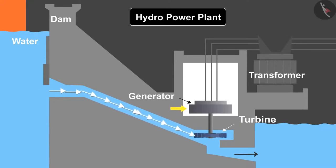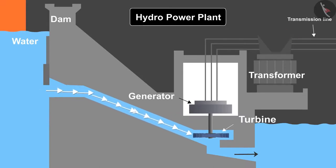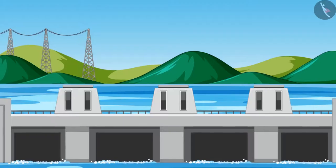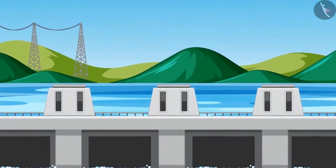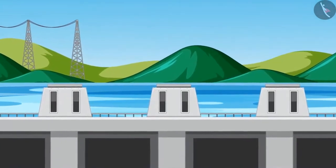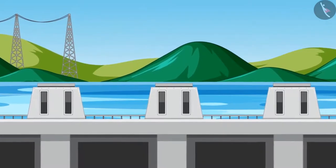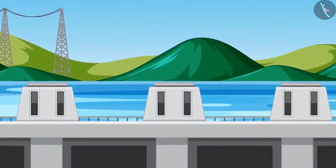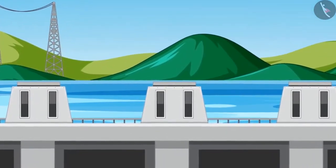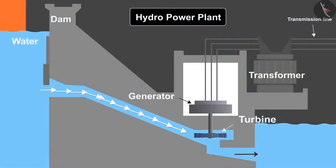The generator converts mechanical energy from the turbine into electrical energy, which is then sent forward via transmission lines. The pros of this energy source are very less pollution and lower cost. However, one major con is that due to the construction of the dam, a large area gets submerged in water, causing people living there to leave their land, and the surrounding environment gets affected.